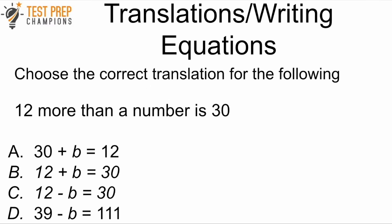Here's a different example where we just set the problem up without doing the math. Choose the correct translation for: '12 more than a number is 30.' The word 'more' often translates to addition, and 'is' translates to equals. So the best fit is B: 12 plus B equals 30. Translating statements into equations is a really important skill — you'll often need to do this when given a word problem on your test.